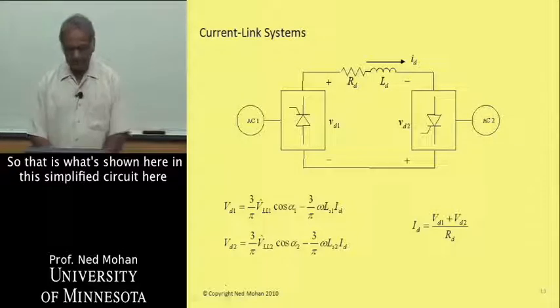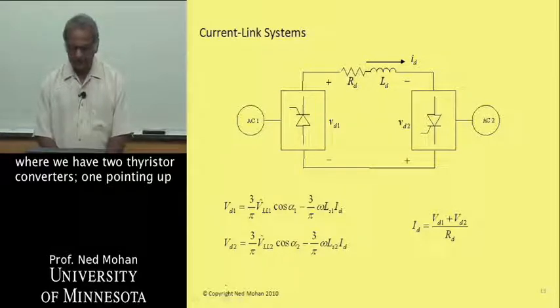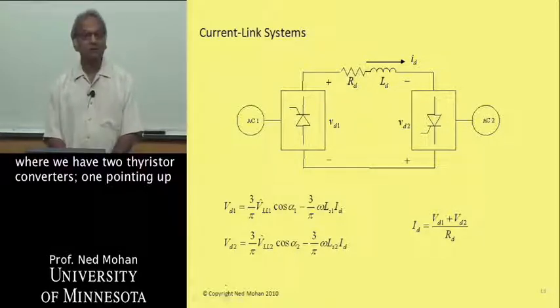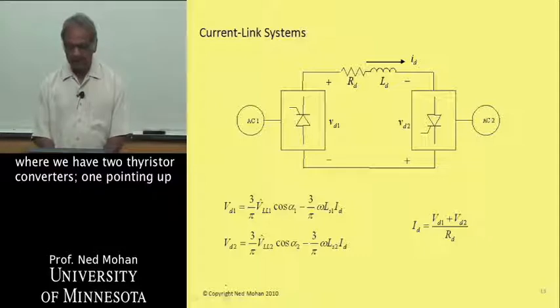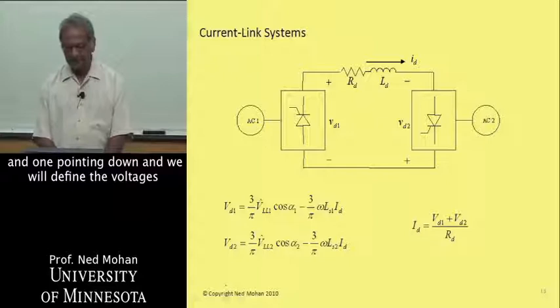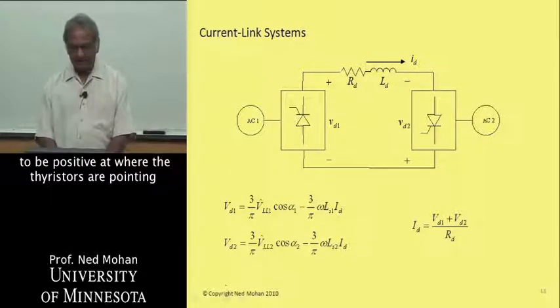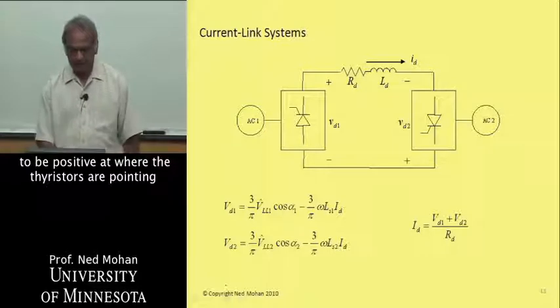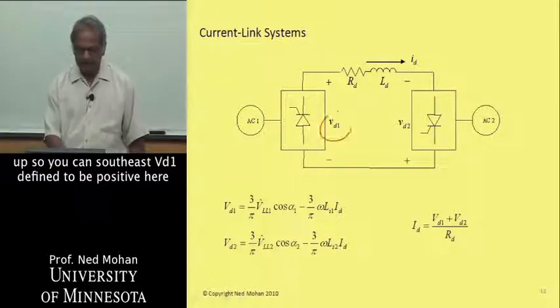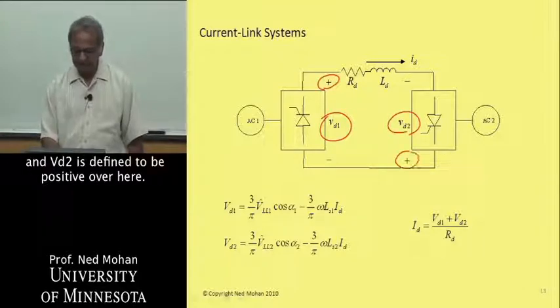That is what's shown here in this simplified circuit, where we have two thyristor converters, one pointing up and one pointing down. We will define the voltages to be positive at where the thyristors are pointing up. VD1 is defined to be positive here, VD2 is defined to be positive over here.